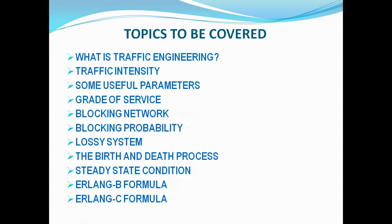Grade of service is basically what kind of quality of service a subscriber gets from the exchange — this is a subscriber parameter. Blocking network: suppose in an area we have a thousand subscribers, but my exchange has the capability to handle 500 calls simultaneously. If demand rises to 550, then 50 subscribers have to be blocked. This type of network is called a blocking network, and any network is essentially blocking by nature. Blocking probability is a property of the exchange.